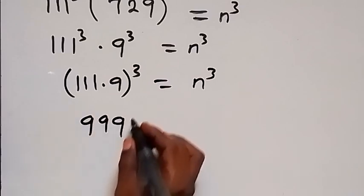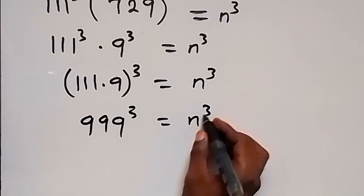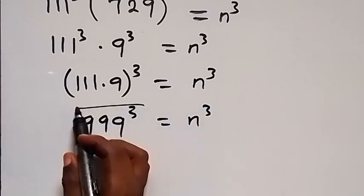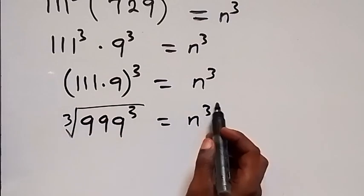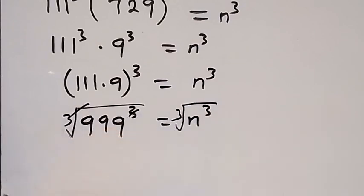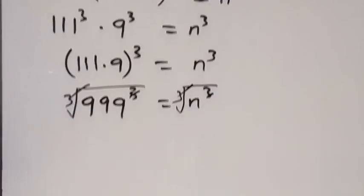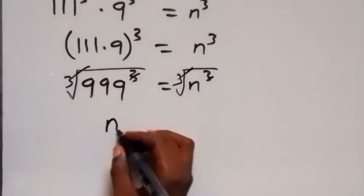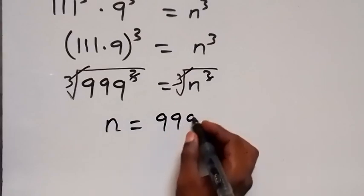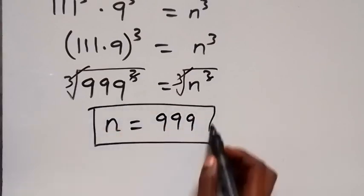And this will become 999, so we have 999 raised to power 3 equals n raised to power 3. Now we can remove this power of 3 — we take the cube roots on both sides so that the powers cancel — and here we can say n is equal to 999. That is the value of n in this problem.